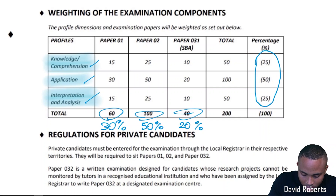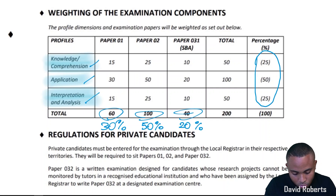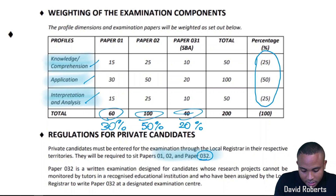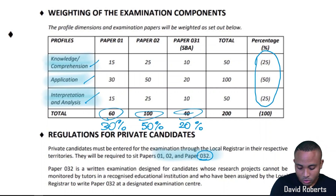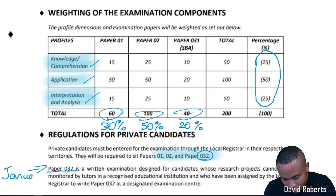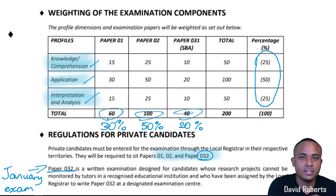Regarding regulations for private candidates: private candidates must enter the examination through the local registrar in their respective territories. They are required to sit Papers 1, 2, and 3 — you cannot avoid Paper 3. Paper 3-2 is a written examination designed for candidates whose research project cannot be monitored within a recognized educational system. For the January exam, everyone must write Paper 3-2. Now let's dive straight into the past paper.